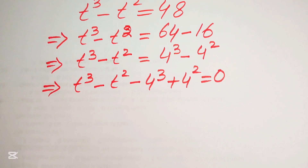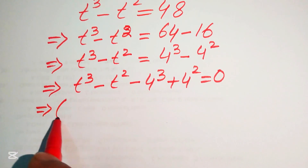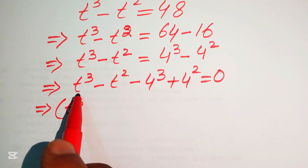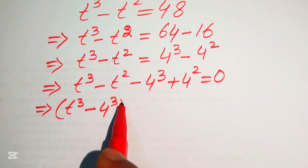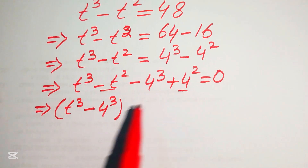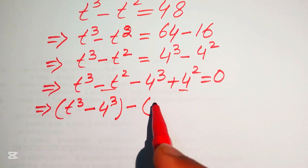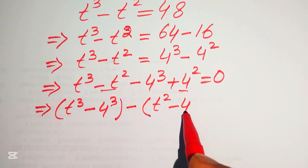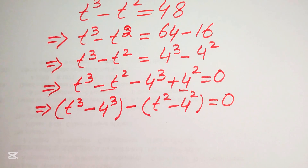In the next step, we pair the cubic terms together and the square terms together. The cubic terms are t cubed minus 4 cubed, and for the square terms we take out a common negative sign, giving minus (t squared minus 4 squared), and this whole expression equals 0.